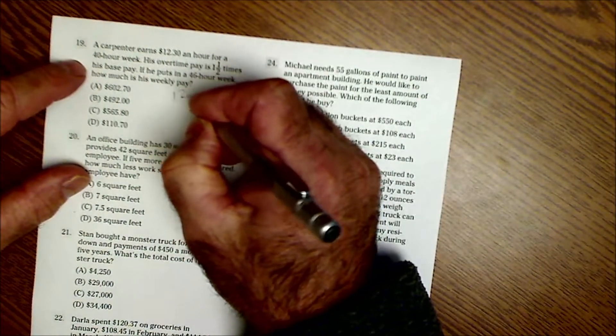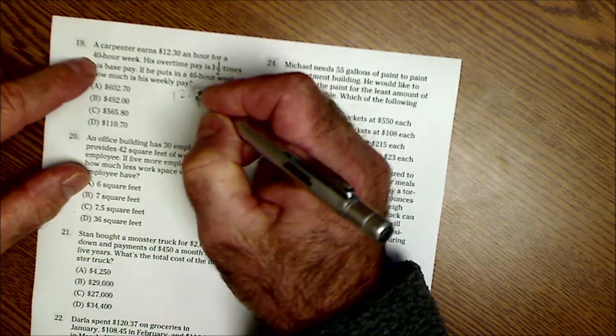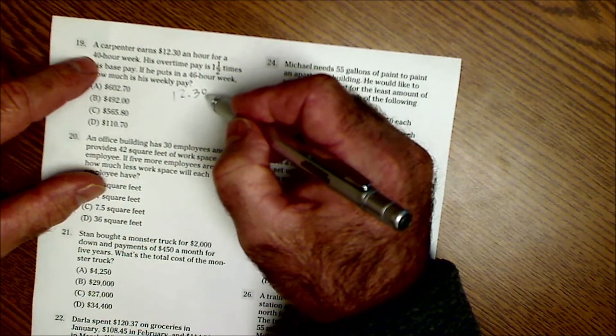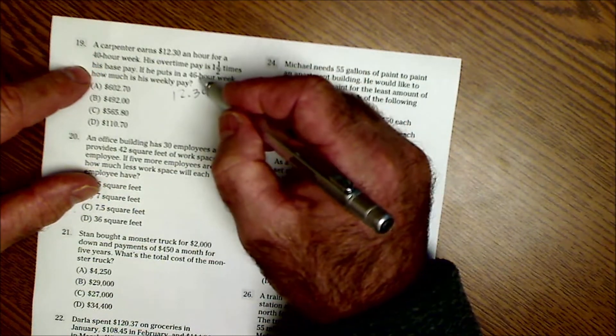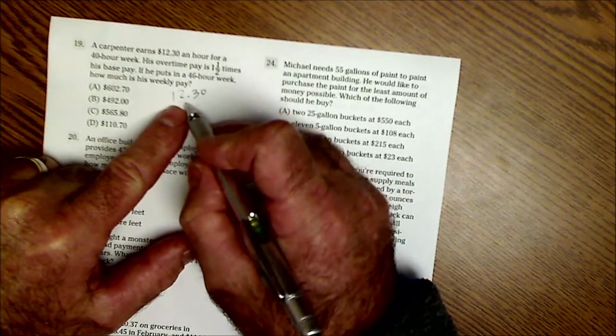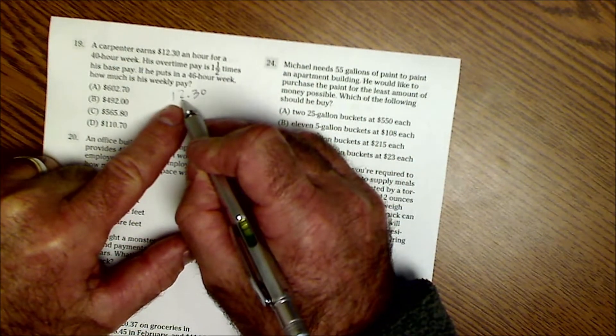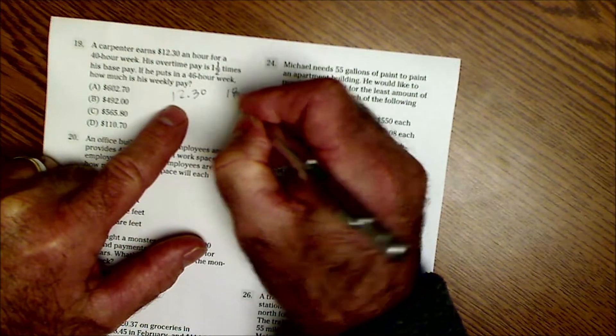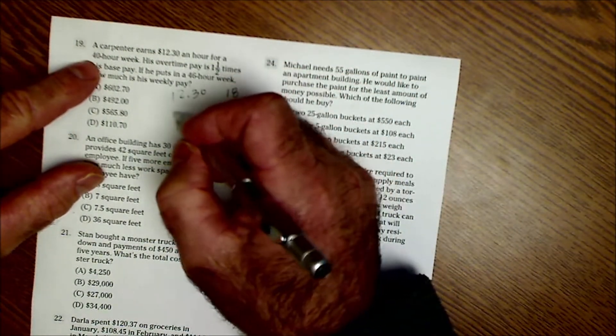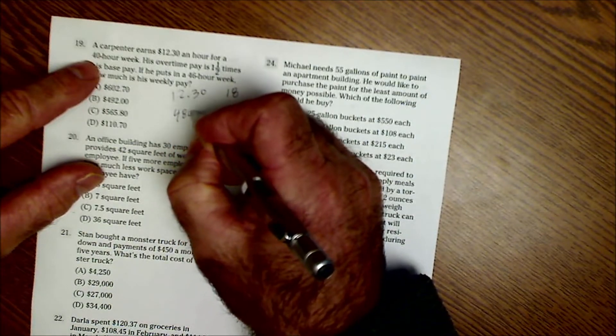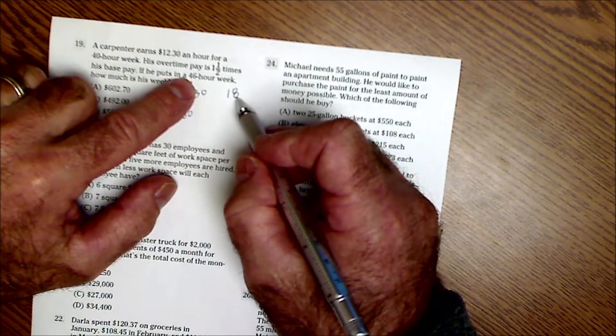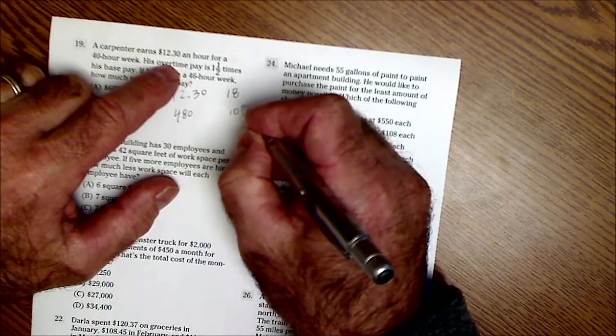A carpenter earns $12.30 an hour for a 40 hour week. He makes one and a half times that amount for overtime and he works 46 hours. So one and a half times $12.30, I'm going to take half of that about six plus the 12 to get 18. So I'm going to round here and we'll see if it works out.